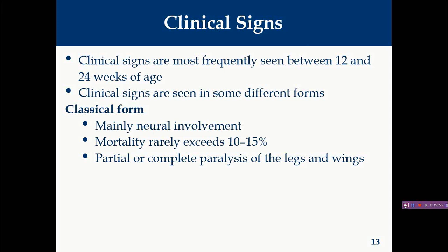In the classical form, there is typical neural involvement because neoplastic cells infiltrate various peripheral nerves. Depending on which nerves are affected, different clinical signs appear. Mortality rarely exceeds 10 to 15 percent. You will find partial or complete paralysis of the legs, wings, or neck. If neck nerves are affected, torticollis results; if leg nerves are affected, spastic paralysis of the legs occurs; if wing nerves are affected, wing paralysis results.